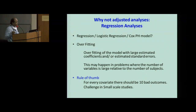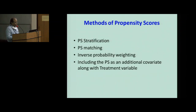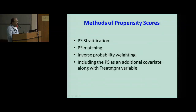The study Ruth presented dealt with thousands of subjects — with that large a number, they can do simple regression analysis and don't necessarily need PSA. The methods of propensity score analysis include: propensity score matching (which she presented), propensity score stratification, inverse probability weighting, and modeling the PSA — using the propensity score with the treatment variable as a covariate in an outcome regression model. Let me explain each one.